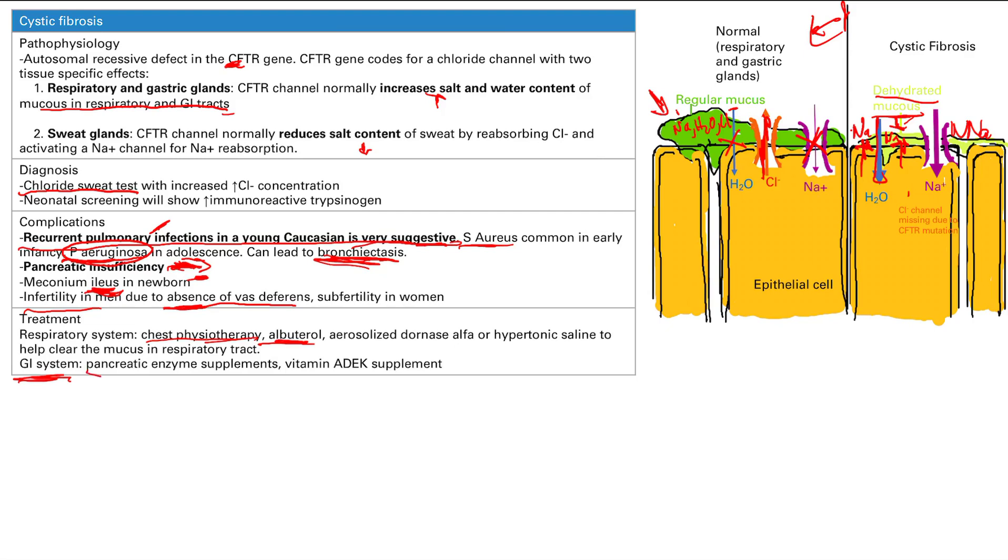GI system—pancreatic insufficiency. We can give them pancreatic enzymes, we can supplement pancreatic enzymes. These patients are not going to be able to reabsorb fat soluble vitamins because they need the pancreatic enzymes to help digest, basically to break down those fats. So they're going to be missing vitamins A, D, E, K. I call it vitamins ADEK. You see that a lot in the GI system. You can supplement this as well.